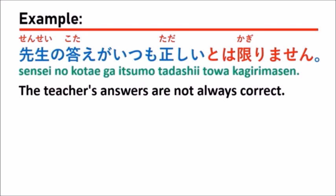In this example, they use とは限りません. とは限りません has the same meaning as とは限らない. But 限らない is not so polite — 限りません is more polite than 限らない. So they have the same meaning, just in different politeness levels.